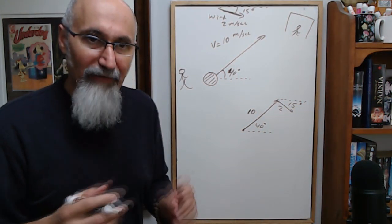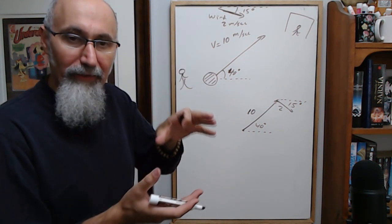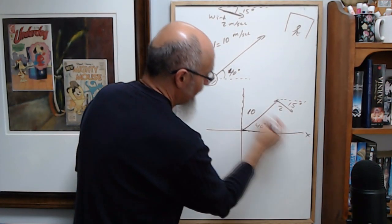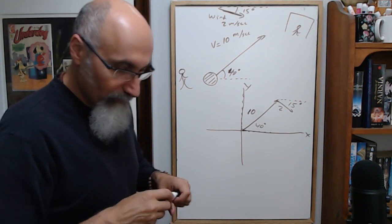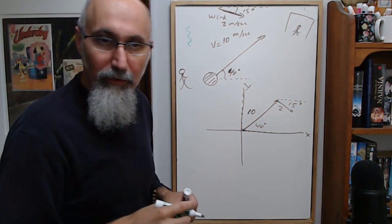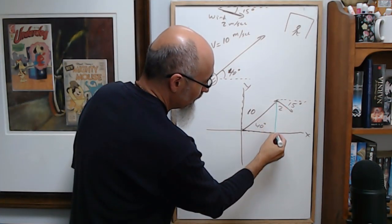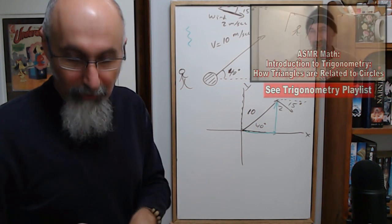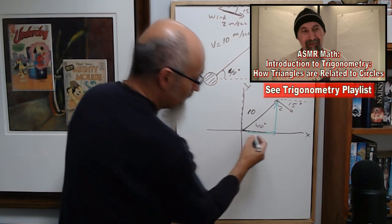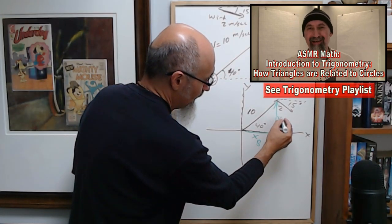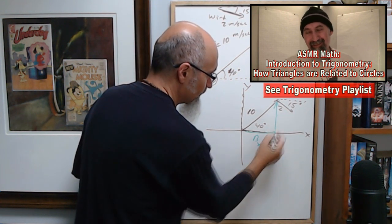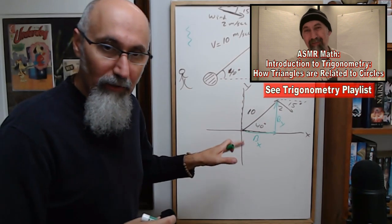The only way to solve this is to break the vectors down into their x and y axes coordinates. Draw your x-axis and y-axis, and figure out the x component and y component of each vector. This is straight-up geometry — SOH-CAH-TOA. We'll call the ball's components Bx and By.